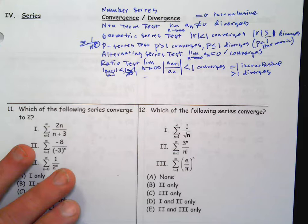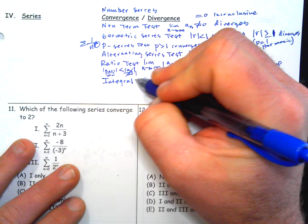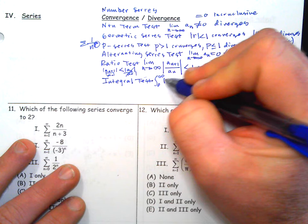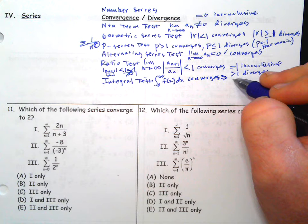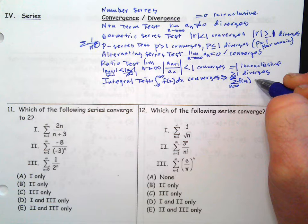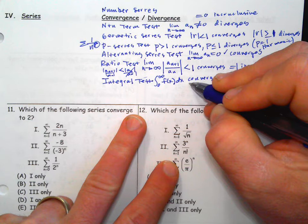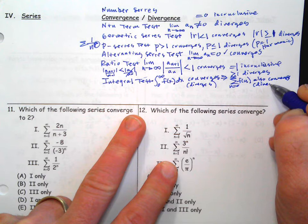The integral test is what we use to figure out the p-series test. It says if you match up a function in terms of x and integrate it as an improper integral and it converges, then your series from n equals 0 to infinity of f(n) also converges — and it works the other way too, if the integral diverges, the series diverges. Requirements: it must be all positive, continuous, and decreasing.